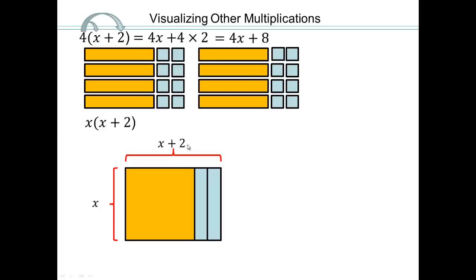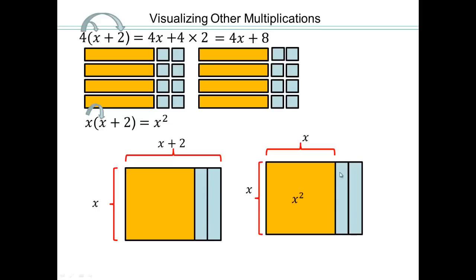So x times x plus 2 can be visualized like that. It's the same as saying x times x, which is x squared, plus what? Plus these things, which is 1x, 2x, so 2 times x. So 2x and x squared, that's the total here. x squared plus 2x. Multiplication distributing over addition.